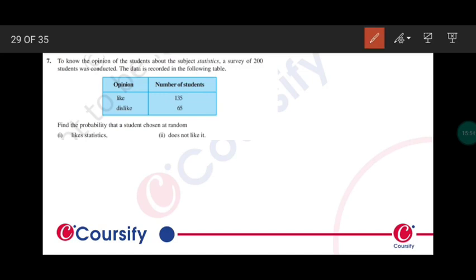So we have total number of students as 200 and number of students who like the opinion is 135. So the first part is P of like, that is L, is equals to 135 divided by 200, is equals to 27 by 40.